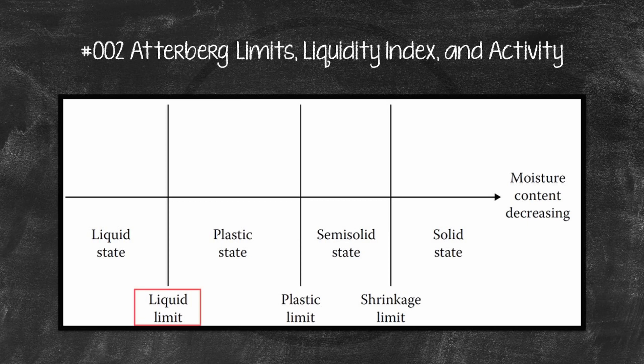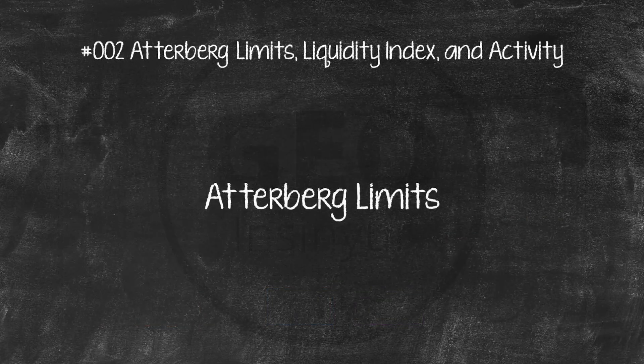The liquid limit is defined as the moisture content, in percent, at which the soil changes from a liquid state to a plastic state. The moisture contents, in percent, at which the soil changes from a plastic to a semi-solid state, and from a semi-solid to a solid state are defined as the plastic limit and the shrinkage limit, respectively. The Atterberg limits of cohesive soil depend on several factors, such as the amount and type of clay minerals, and the type of adsorbed cation.